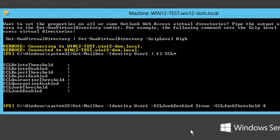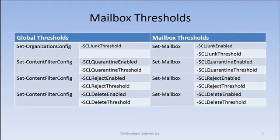Now the global junk threshold no longer applies for emails addressed to this user. Likewise, we can override the quarantine, reject, and delete thresholds. This slide shows the set-mailbox parameters used in each case. The global and mailbox options use the same naming but are defined a bit differently.